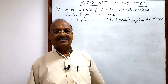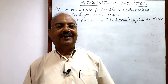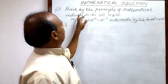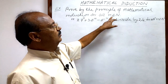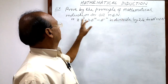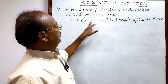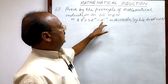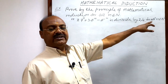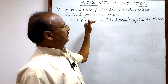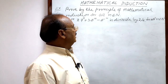Welcome students. Let us see a very interesting and important question from the chapter Mathematical Induction. The question is: prove by the principle of mathematical induction, for all n belonging to the set of natural numbers, that 2·7ⁿ + 3·5ⁿ - 5 is divisible by 24 for all n belonging to the set of natural numbers.